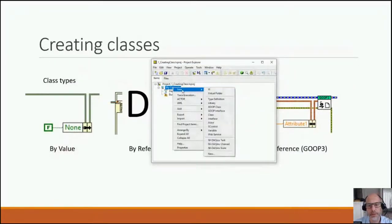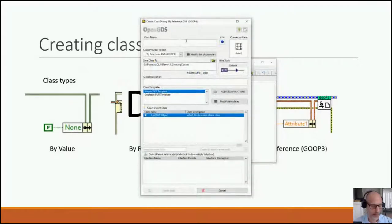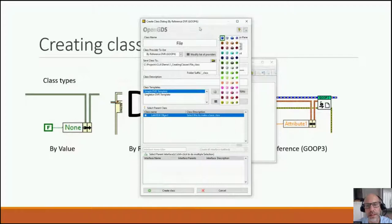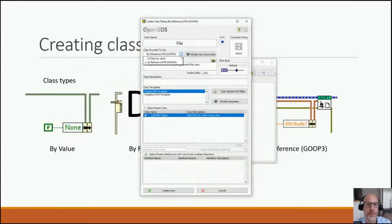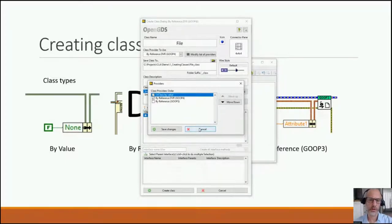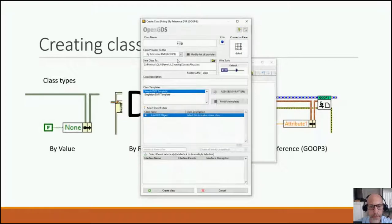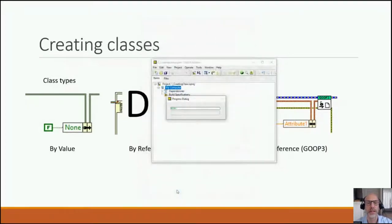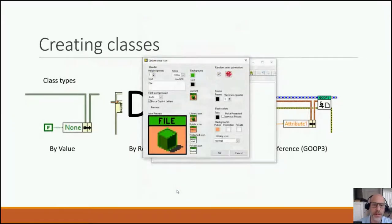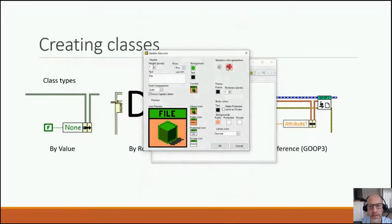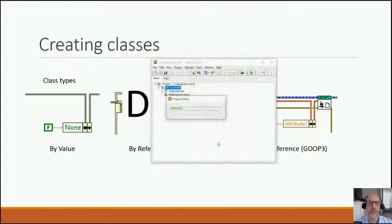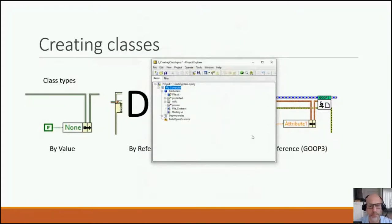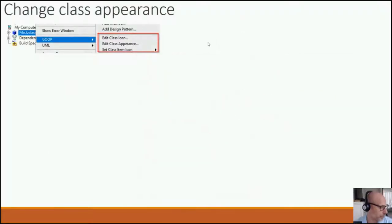I'm going to create a class — I'll call it the 'File' group class. I can select the icon, change the connector pane, wire style, and switch the class provider order so my preferred provider is at the top of the list. I'll just create this class and it gets created in the project in a separate folder. I often randomize the color — that looks good. So now I've created my first class, easy.